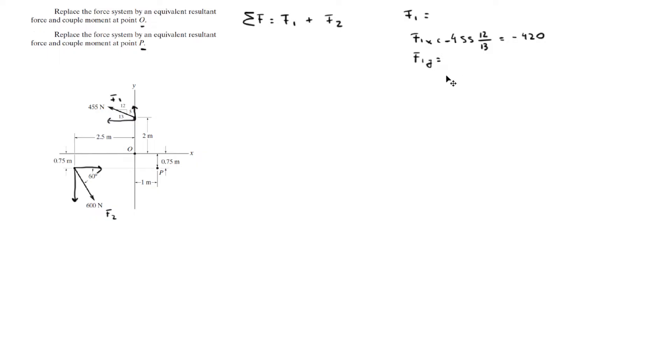So that means that this is equal to negative 420. For the Y, this is going up, so we're going to use the 455 magnitude. It's positive because it's going up. And we're going to use a triangle ratio, which is 5 over the hypotenuse. And that will give you 175. So the Cartesian vector form of F1 is negative 420i plus 175j.